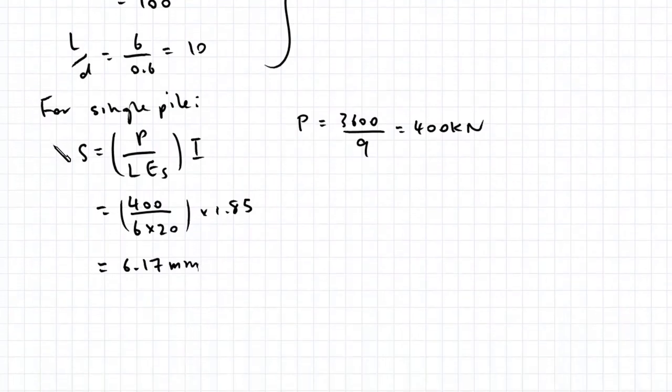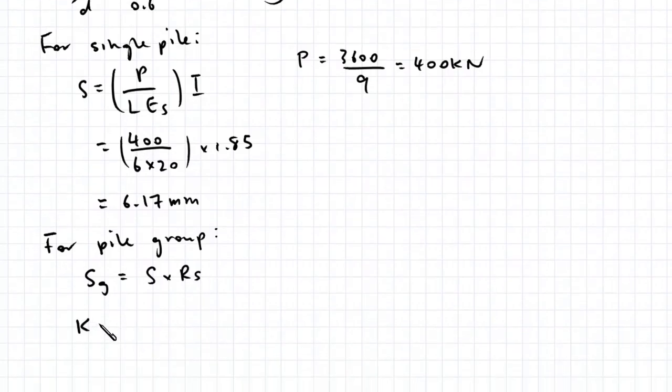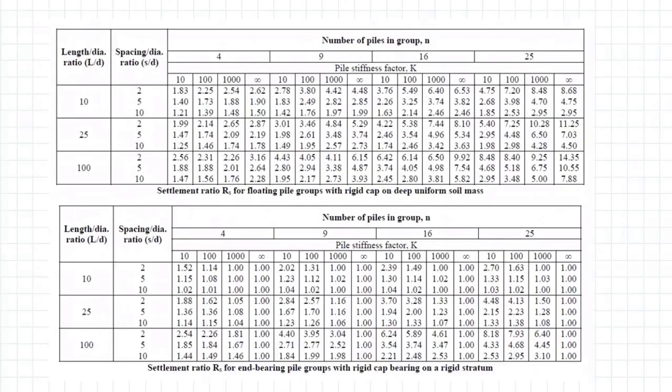To find the settlement for the pile group, Sg equals S multiplied by Rs. K is 100, L over D is 10, and spacing over diameter is 3 divided by 0.6, which is 5. Going to this table, we have a floating pile group with 9 piles.